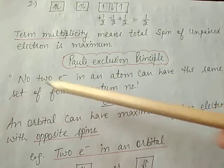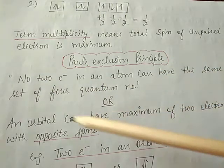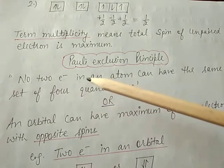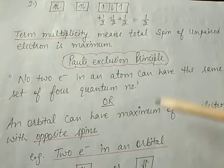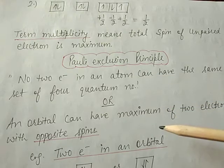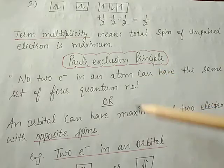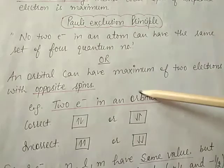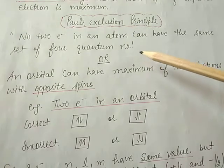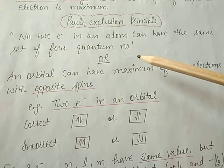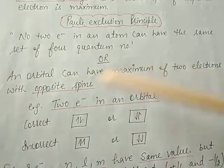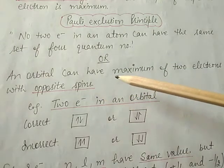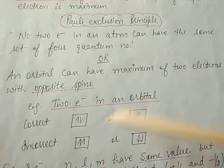The next principle is the Pauli exclusion principle. It states that no two electrons in an atom can have the same set of four quantum numbers. This means for any two electrons, the values of n, l, m, and s cannot all be the same. Only two electrons can exist in the same orbital and these electrons must have opposite spin. So an orbital can have a maximum of two electrons with opposite spin.